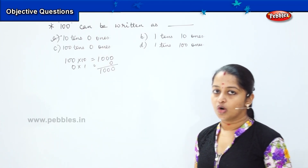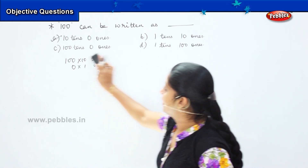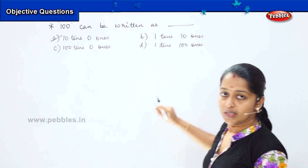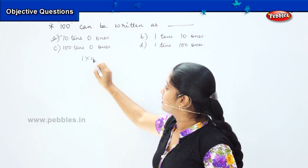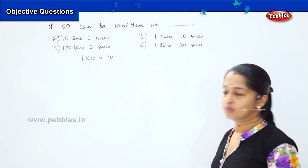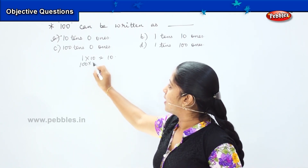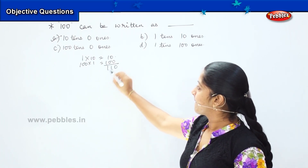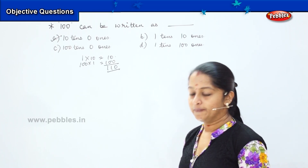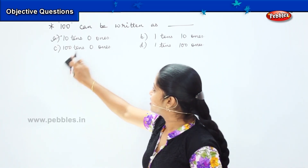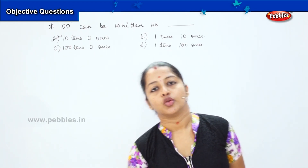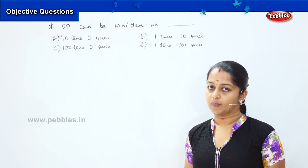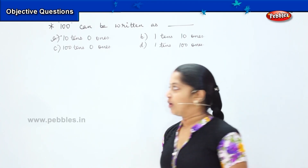Option C is also not the right answer. Coming to Option D — 1 ten and 100 ones: 1 into 10 is 10, and 100 into 1 is 100. Adding gives 110, which is again not the right answer. So did you understand, children? It is just a tricky question. You don't need to get tensed about it — just solve it and figure out the answer.